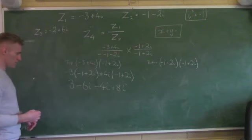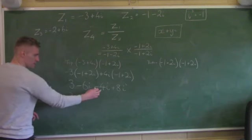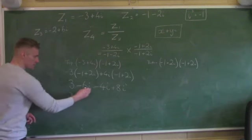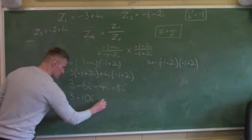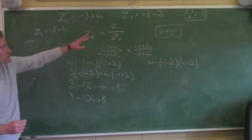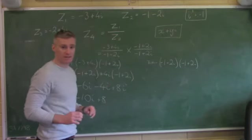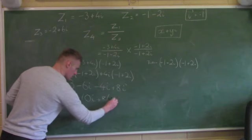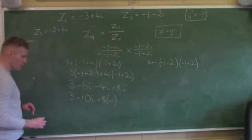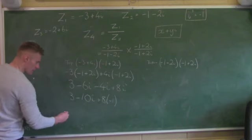Now I'll add and subtract what I can. I have 3, then minus 6i minus 4i gives minus 10i. Plus 8i squared. Remember back to the start of the question — i squared equals minus 1. So instead of i squared I'm putting in minus 1. I have 3, and 8 times minus 1 gives minus 8. So 3 minus 8 gives minus 5. Minus 10i. That's my answer for the top.